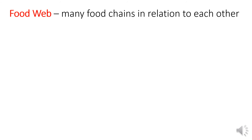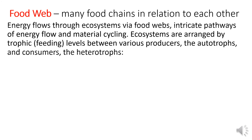Food web. Many food chains in relation to each other are called food webs. Energy flows through ecosystems via food webs, indicating pathways of energy flow and material cycling. Ecosystems are arranged by trophic levels between various producers, the autotrophs, and consumers.